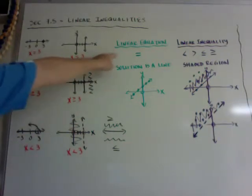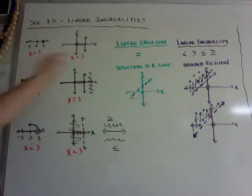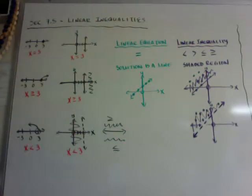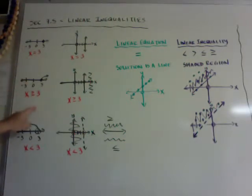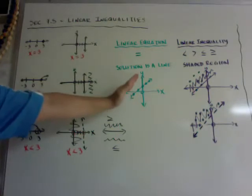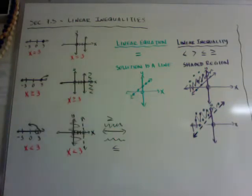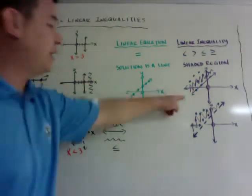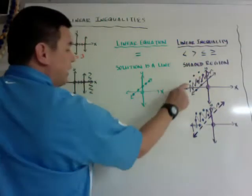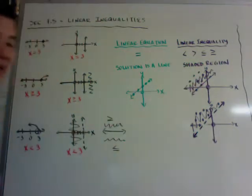Here are the comparisons between linear equations and linear inequalities. For a linear equation you have an equal sign; for a linear inequality you have one of the four inequality signs. Your solution for a linear equation is a line — any dot on the line is a solution. For a linear inequality, your solution is going to be a shaded region. If it's a solid line and everything above it, any of those dots above the line is a solution, as well as any dot on the line itself.